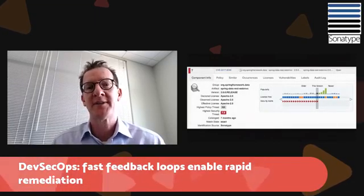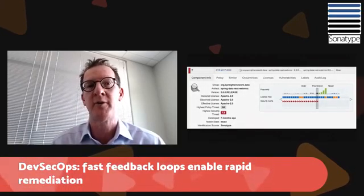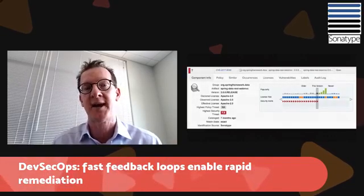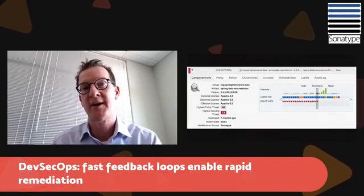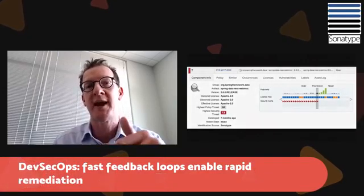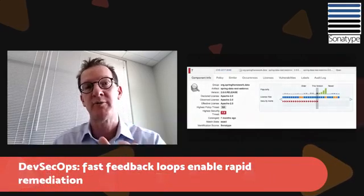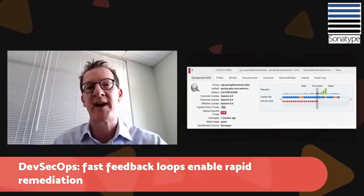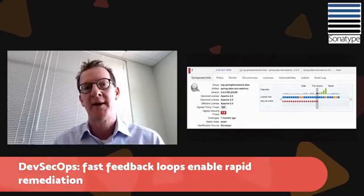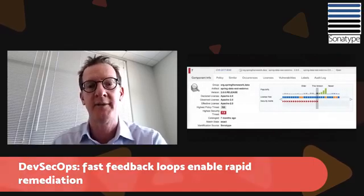It provides not only automated information that says this particular vulnerable component is out there, but it provides automated feedback to developers to say this vulnerability is there, here's a safe version of that component to use, and when you go through to fully remediate these components, you can close your remediation loop even faster. DevSecOps is not just about informing people that you have vulnerabilities, but expediting the way that they can fix those vulnerabilities in their environments.